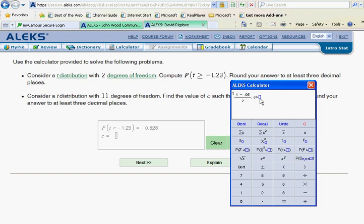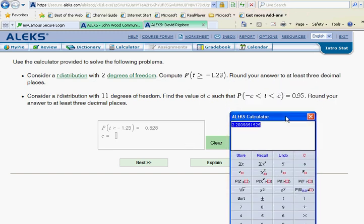Our degrees of freedom here in this one is 11. So we simply put that in and we have our answer. They want this rounded to three places. So 2.201.